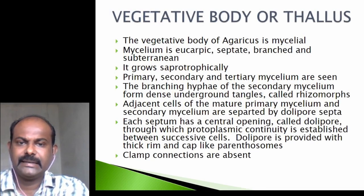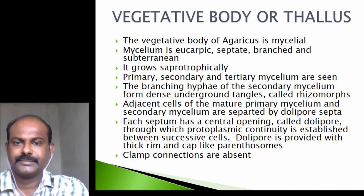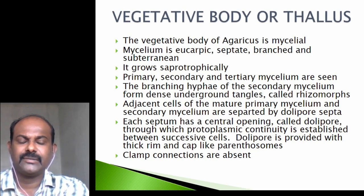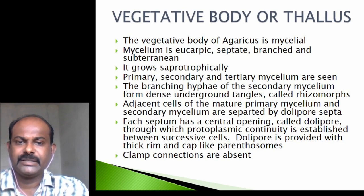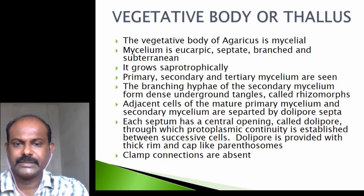The vegetative body of Agaricus is its mycelium. The mycelium is eukaryotic, septate, branched, and subterranean (grows below the substrate). Primary, secondary, and tertiary mycelium are seen. The branching hyphae of the secondary mycelium form dense underground strands called rhizomorphs. Adjacent cells of the primary and secondary mycelium are separated by dolipore septa with a central opening maintaining protoplasmic continuity, protected by parenthesomes. Clamp connections are absent in Agaricus.